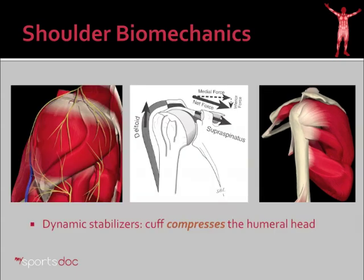Now, contrary to what many believe, the rotator cuff muscles aren't technically responsible for lifting the shoulder or allowing our arm to move forward. However, without them we can't lift our arm. The reason is that the deltoid muscle — this large muscle overlying the whole shoulder — is actually what provides the power to lift the humerus. You can see that in this diagram here: the deltoid pulls on the humerus, allowing us to lift the arm.